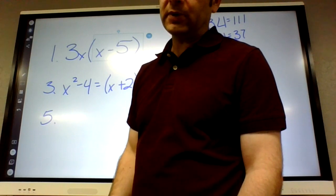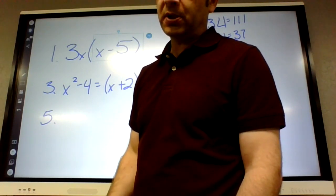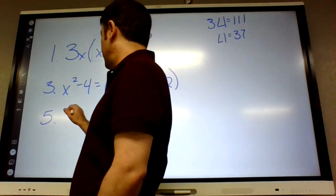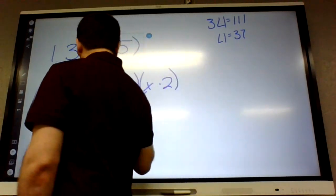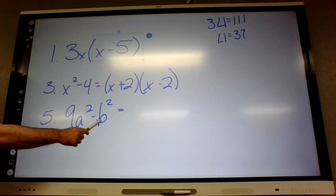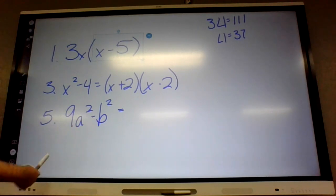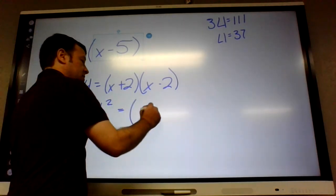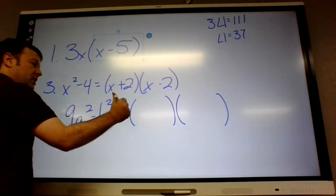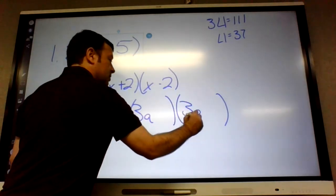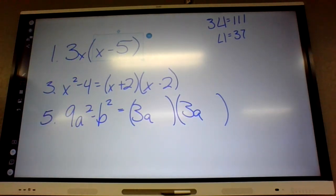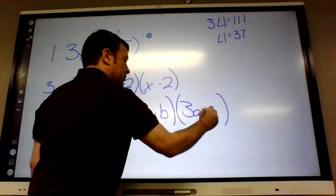Number 5. 9A squared minus B squared. Can we take anything out of this? You can take nothing out, no. There's no numbers in this one. Is it a square minus a square? Yes. So what goes in the front? What multiplies into that? 3A. And then what goes in the negative B squared here? Negative B plus B. Negative B times positive B.